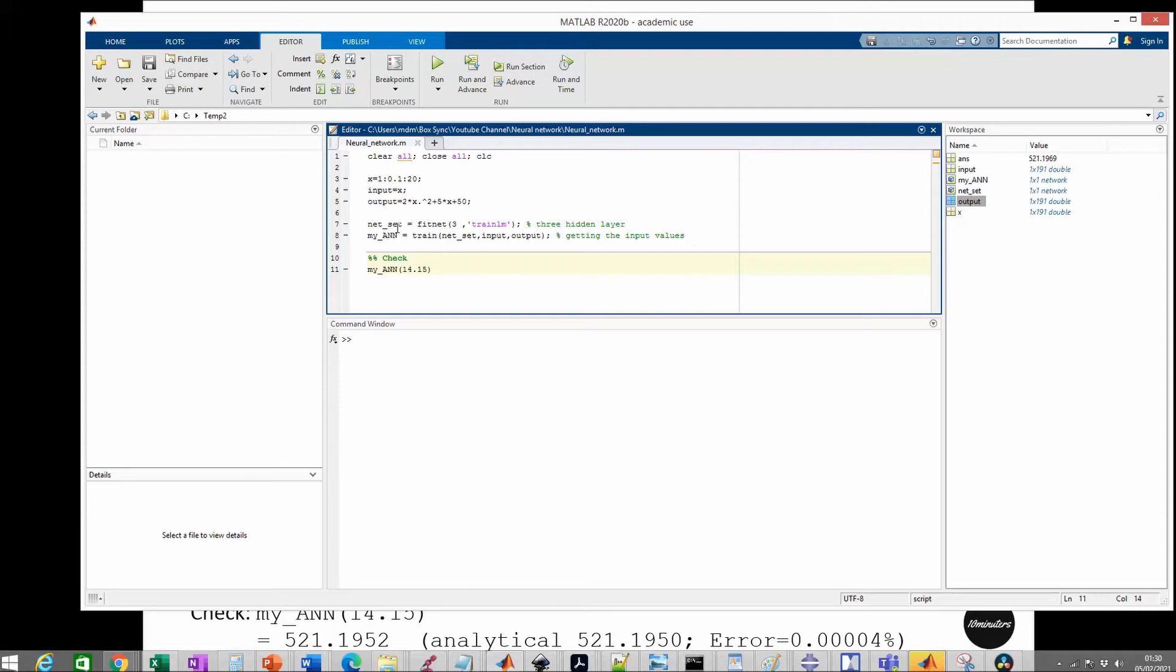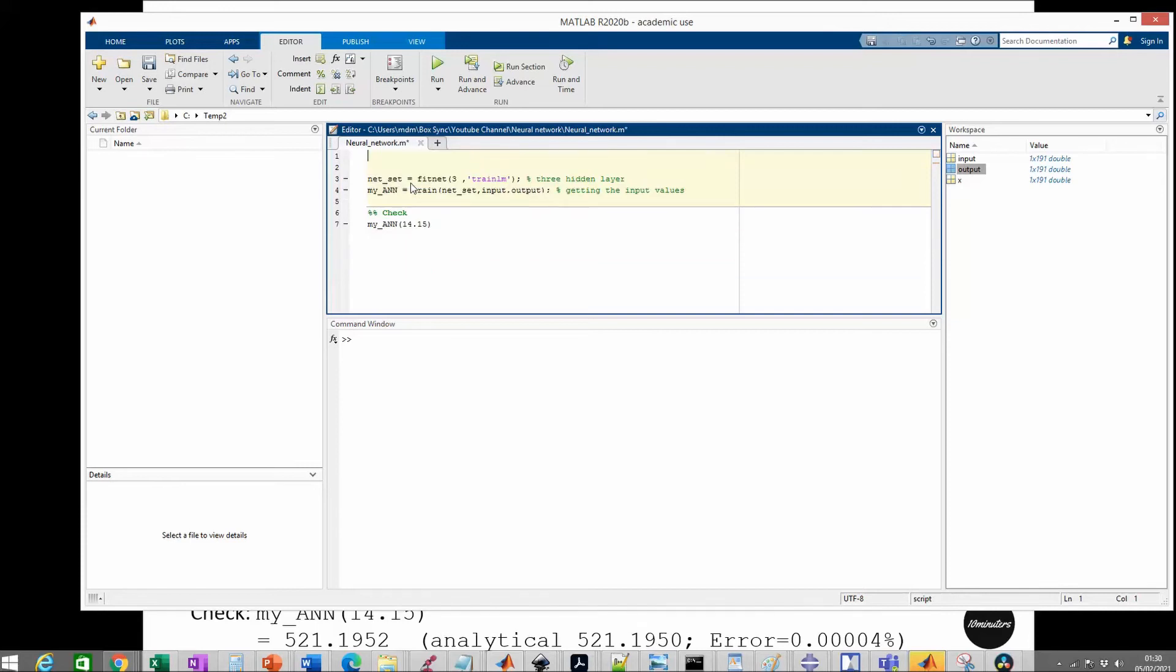First, you have given him the input and output data or the plot. Let's run this. After that, he has no information about the equation except the input and output. As I showed earlier, he can set up this artificial neural network and train it using just those inputs and outputs. Let's do the training.